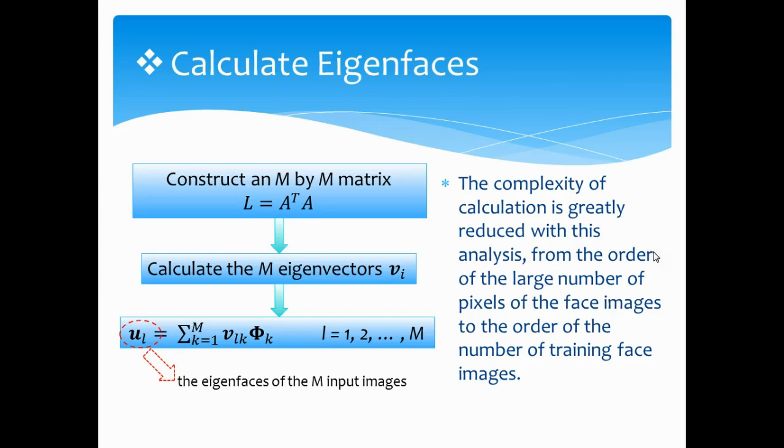To get the eigenfaces UL, we need to construct an M-by-M matrix L equal to A transpose multiplied by A. Calculate the eigenvectors of matrix L. Then, the meaningful eigenvectors of the covariance matrix C can be obtained by this operation. The complexity of calculation is greatly reduced with this analysis from the order of the large number of pixels of the face images to the order of number of training face images.